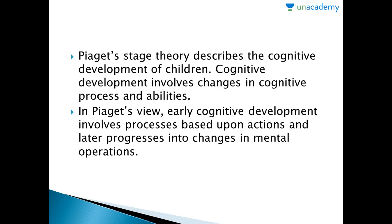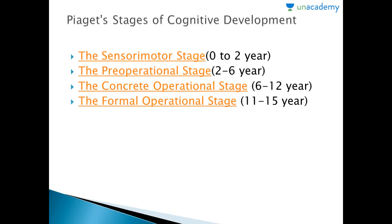Piaget's stage theory describes the cognitive development of children. Cognitive development involves changes in cognitive processes and abilities. In Piaget's view, early cognitive development involves processes based upon actions and later progresses into changes in mental operations. Piaget's stages include the sensorimotor stage (0 to 2 years), pre-operational stage (2 to 6 years), concrete operational stage (6 to 12 years), and formal operational stage (11 to 15 years). The sensorimotor stage is a stage of practical intelligence — every child is born with certain strategies for interacting with the environment, and the child does not yet have the capacity to represent objects or people — out of sight is out of mind. As maturation progresses, simple reflexes begin to be coordinated, for example looking combined with arm movements resulting in hand-watching.